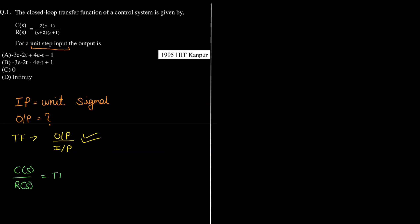The transfer function value is 2 times (s minus 1) divided by (s plus 2) into (s plus 1). That means our input is R(s) and our output is C(s).